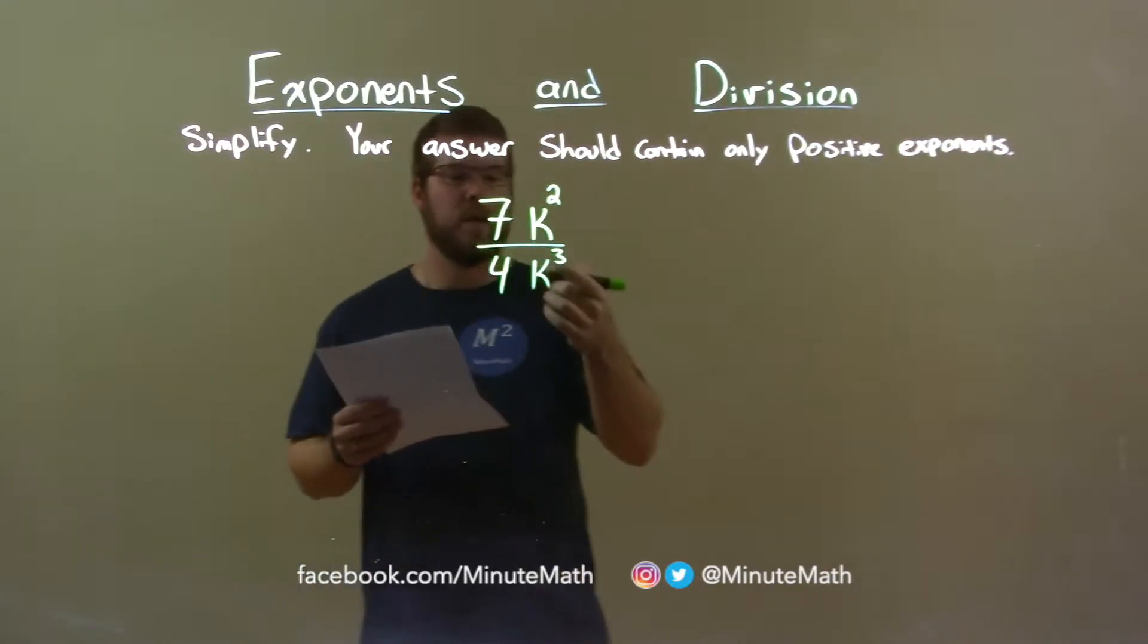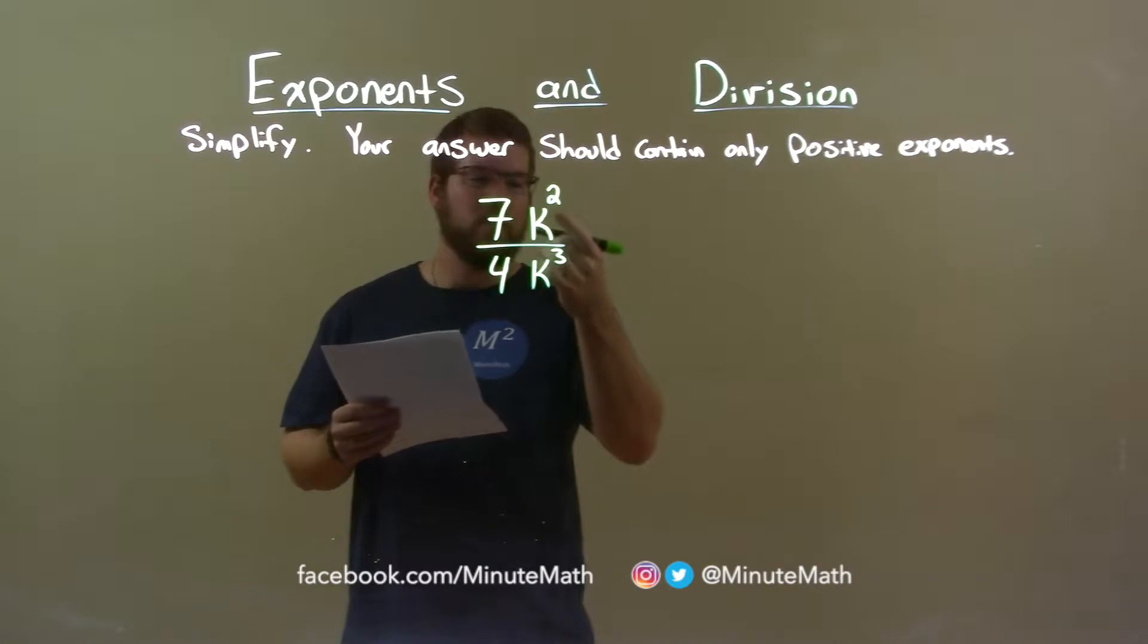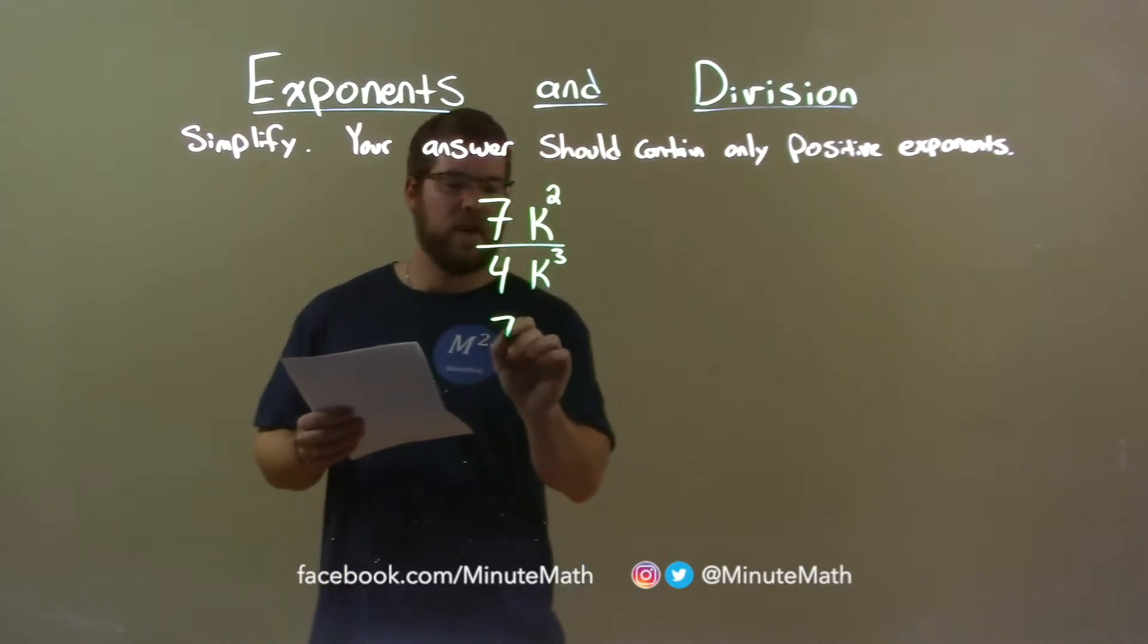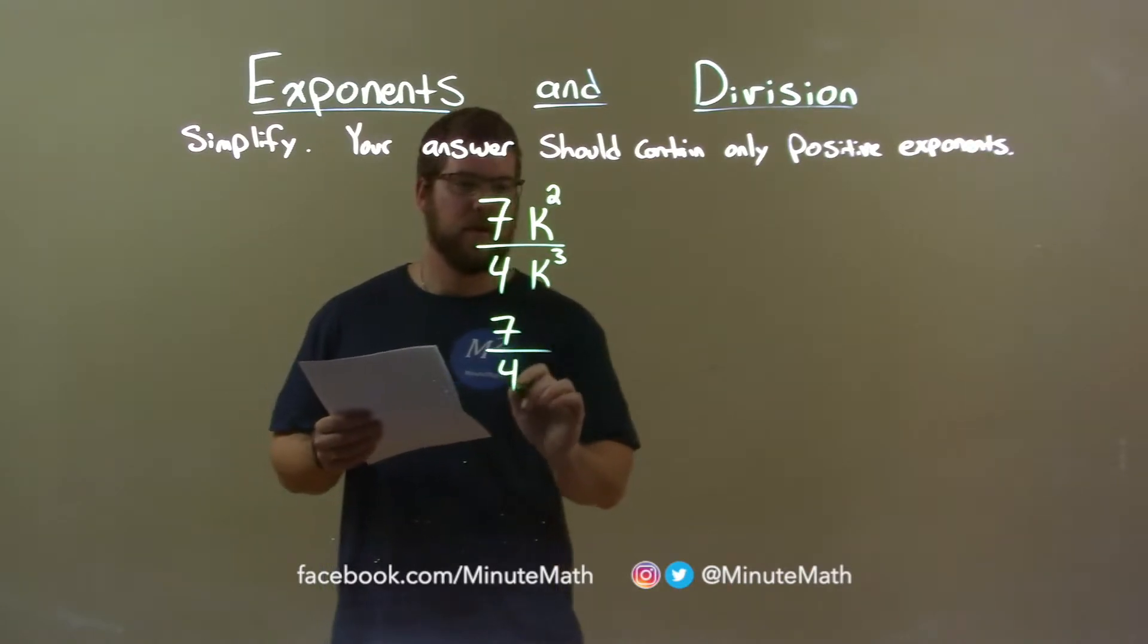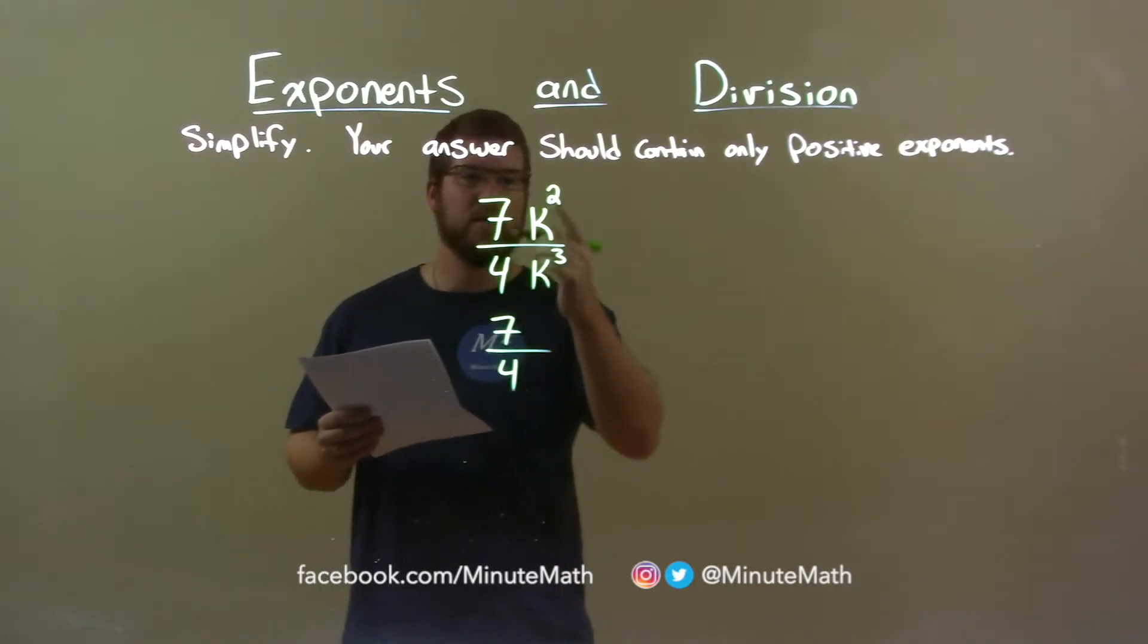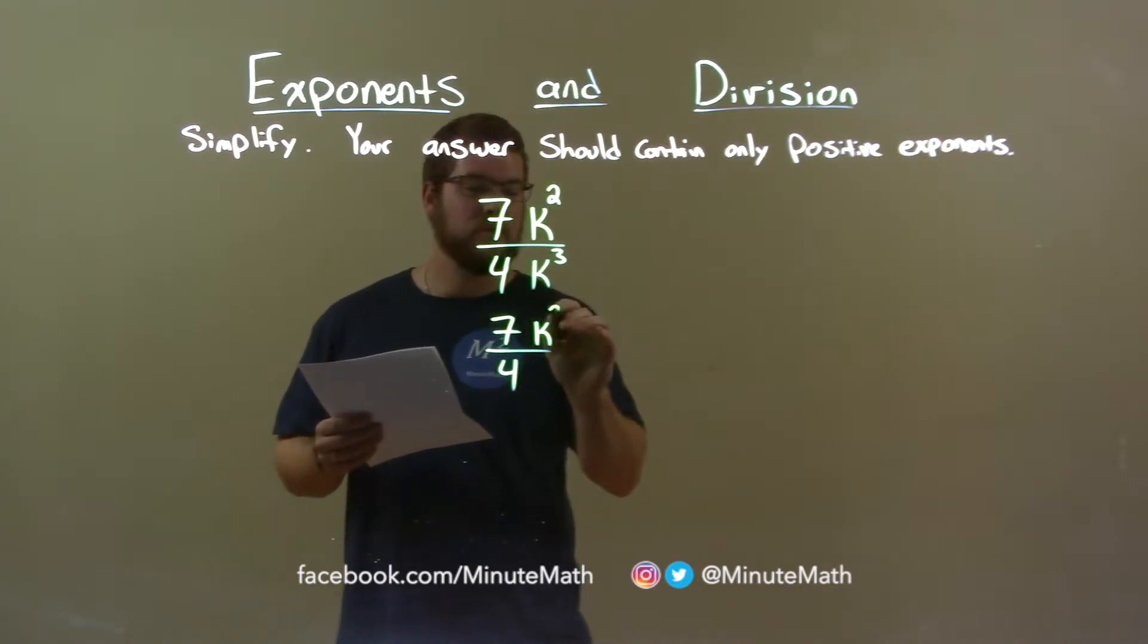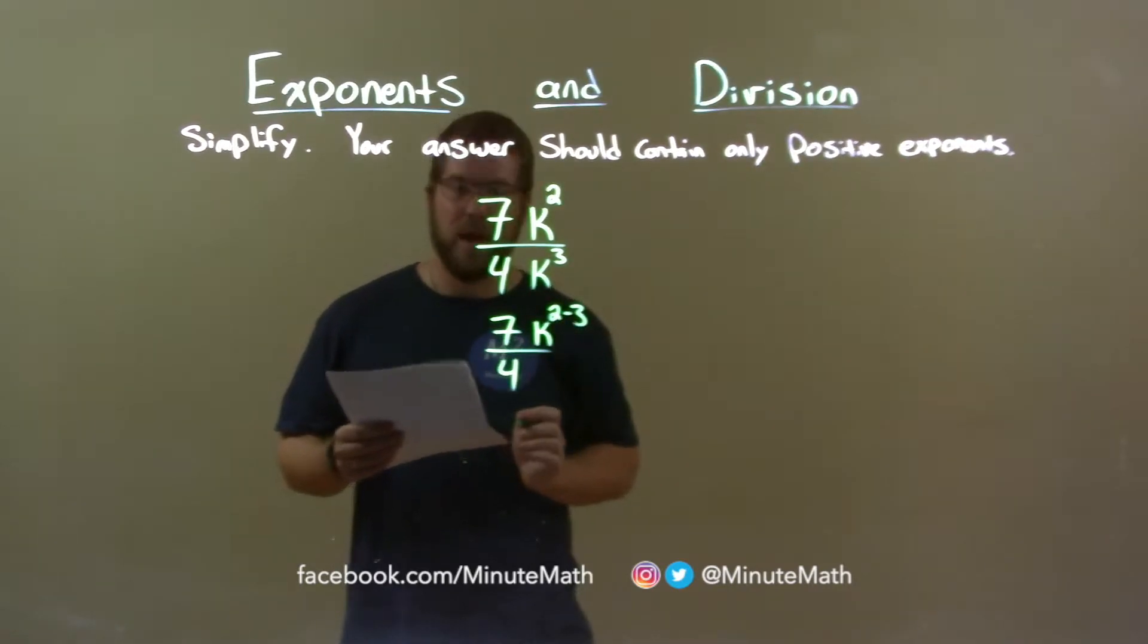Well, we have the same base here, and when we divide with variables that have the same base, we have to subtract the exponents. So, 7 over 4 stays there. And then we have k to the second power divided by k to the third, so that's k to the 2 minus 3 power.